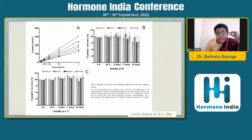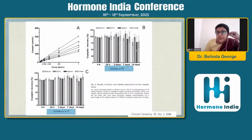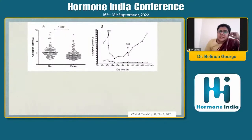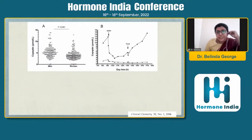Copeptin has a longer half-life than vasopressin because it is a glycosylated peptide. It is cosecreted in equimolar concentrations, has 39 amino acids giving more epitopes for robust antibody-based assays, and — best of all — it is stable in vitro and does not undergo rapid degradation. Early studies show it is stable at room temperature for seven days with hardly any decrease; at four degrees centigrade, there is barely any reduction even at two weeks. Men tend to have slightly higher values than women, and there is no circadian rhythm, so it can be collected at any time of day regardless of meals.